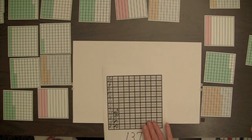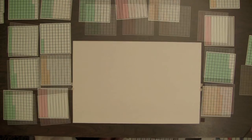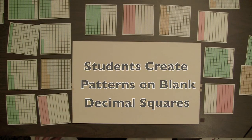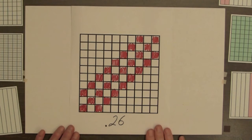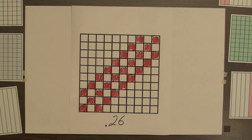The shading of blank squares can be created. 0.26, or 26 hundredths, have been shaded for this square.